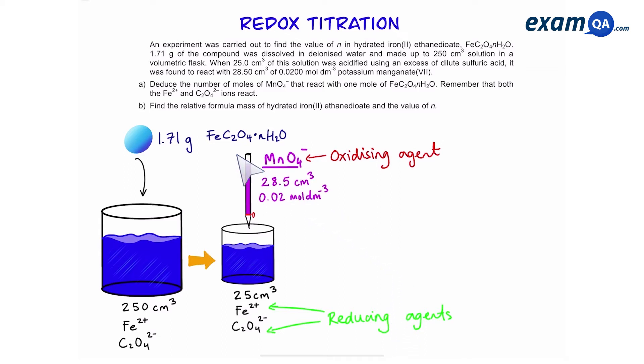So part A of the question says deduce the number of moles of MnO₄⁻ that reacts with one mole of FeC₂O₄. So to answer that let's write down the half equations for the oxidizing agents and the reducing agents.